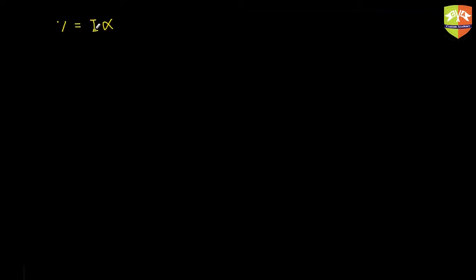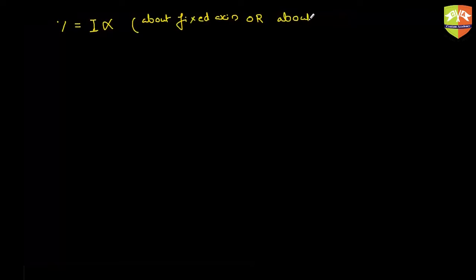I'll quickly list down the formulas we are going to use. First, torque is the cause of rotation: torque equals I·alpha. This equation is valid only about a fixed axis or about the center of mass axis. If you change the axis, torque will be different, moment of inertia will be different, but alpha is the same for the entire rigid body.